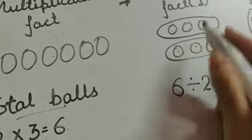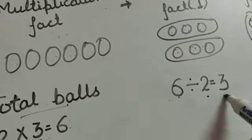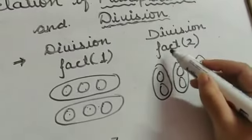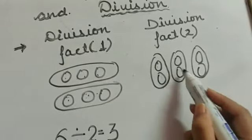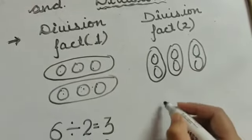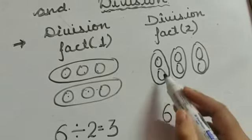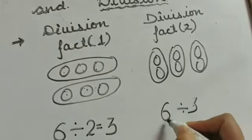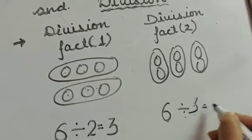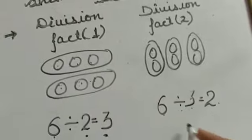6 balls divided into 2 groups and each group has 3 balls. In division fact 2, 6 balls: 1, 2, 3, 4, 5, 6. 6 balls divided into 3 groups: 1, 2, 3. So, 6 divided by 3 is equals to 2.